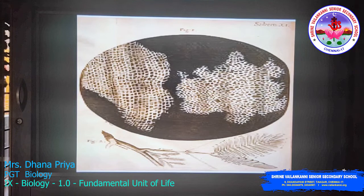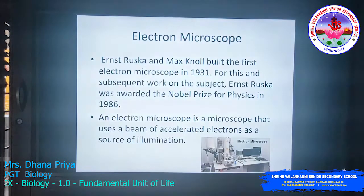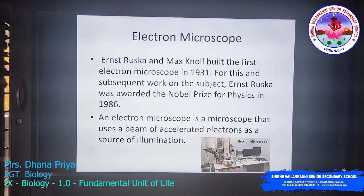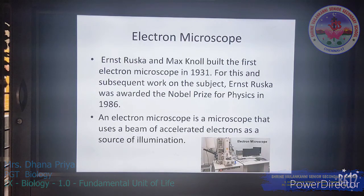This was the first slide observed by Hooke — a cork from the oak tree, the first specimen identified under the microscope. The later version of the microscope is the electron microscope. Ernst Ruska and Max Knoll built the first electron microscope in 1931. For this and subsequent work on the subject, these scientists were awarded the Nobel Prize for Physics in 1986.